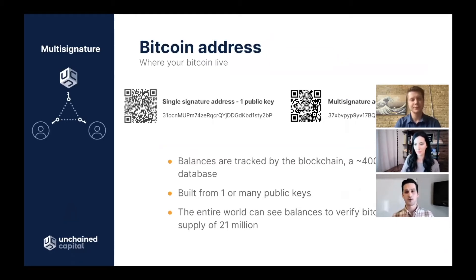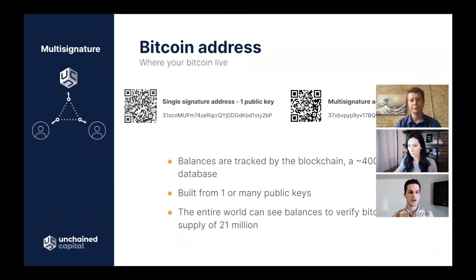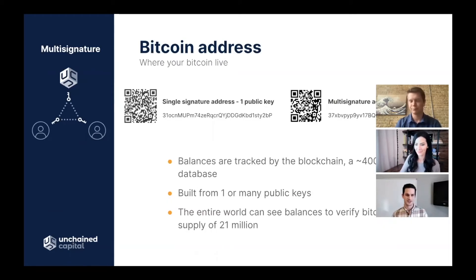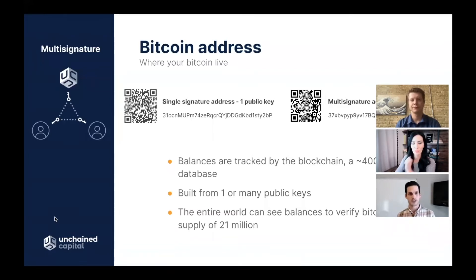Let's jump into key terms. First: Bitcoin address — this is where your Bitcoin lives on the blockchain. We have two examples: a single-signature address, built using one public key, and a multi-signature address, built using two or more public keys. They look virtually identical to the untrained eye. Public keys are used to build addresses, and the entire world can see the balances of every Bitcoin address on the blockchain — that's how we verify the 21 million supply cap. Every Bitcoin that exists lives in an address.